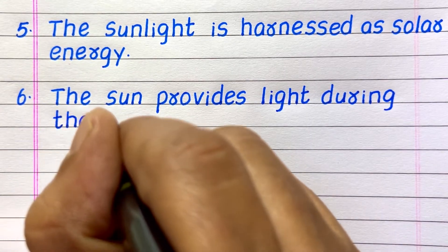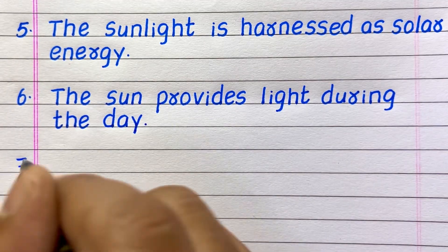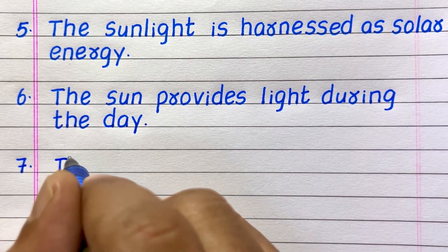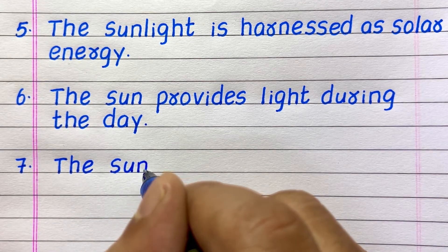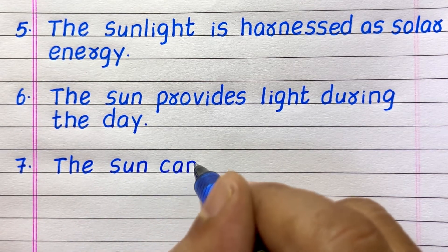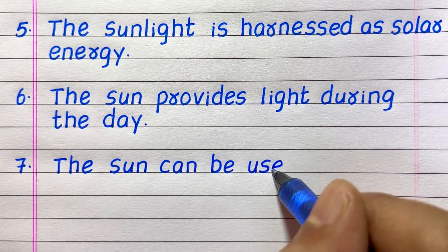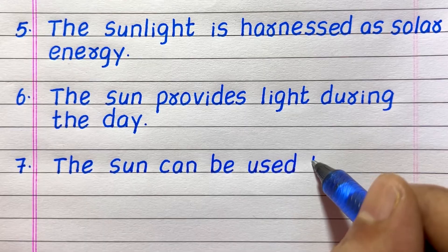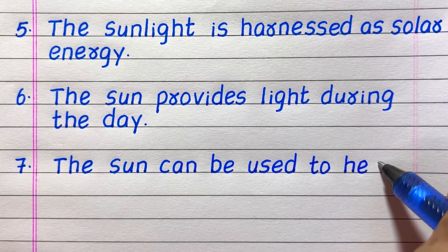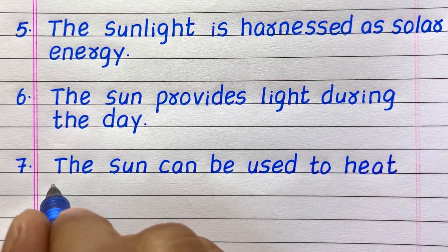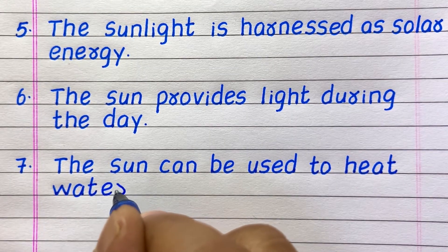Sixth, the Sun provides light during the day. Seventh, the Sun can be used to heat water.